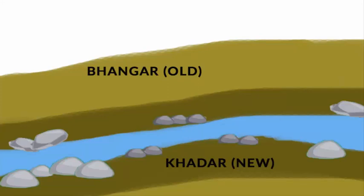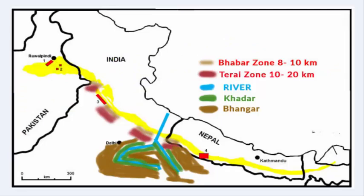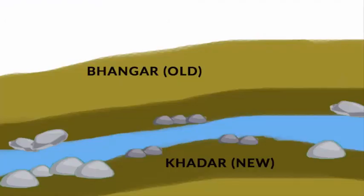Below the Tarai zone, there are old and new alluvial deposits known as the Bhangar and Khadar. When the river comes down from the Himalayas and crosses the Bhabar and Tarai regions and reaches the plains, the green-colored portion on the map next to the riverbed is the Khadar — the fresh deposit of alluvial soil. It continuously flows with the river, is not stable, and gets renewed every year. The brown-colored portion a little further from the riverbed is the Bhangar, the oldest form of alluvial soil. Khadar is the zone nearer to the riverbed, while Bhangar is further away and represents older deposits formed over many years.